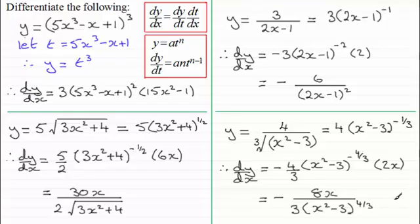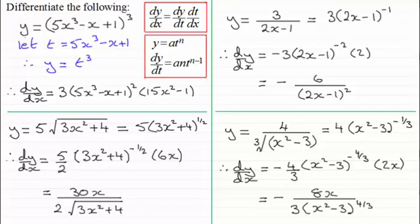So that's how we use the chain rule when handling polynomials raised to a power, as you can see in each of these examples. Now in the next few videos, I'm going to be still using the chain rule but showing you how to differentiate logarithmic types, exponential types, and trigonometric types — so do have a look at those, and I hope you'll find those useful too.